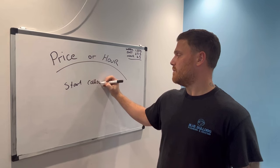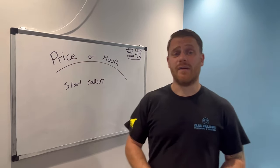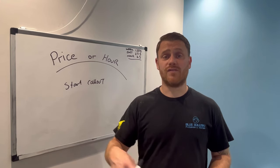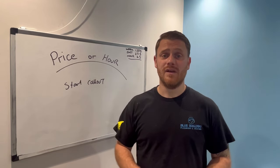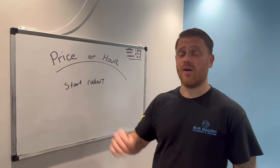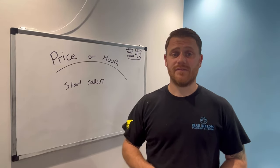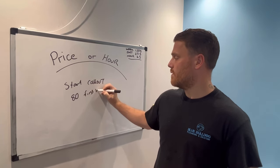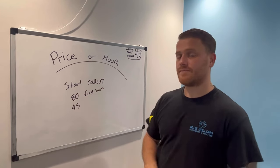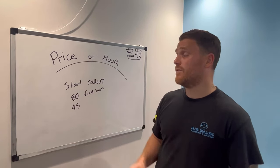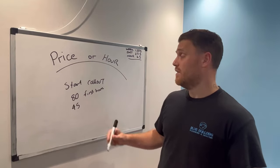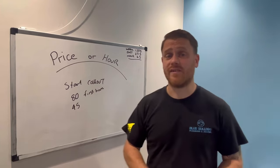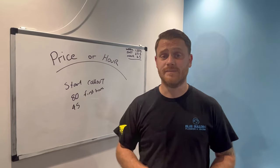If you're going blind into a job — say a concealed water leak — that's where your hourly rate steps in as a guide, because you don't know how long it'll take. It could be an hour or four hours. Some people use a call-out fee, for example £80 call-out and then £45 per hour after that, to cover travel to the job. So the customer knows it's £80 for the first hour, then £45 per hour after that.